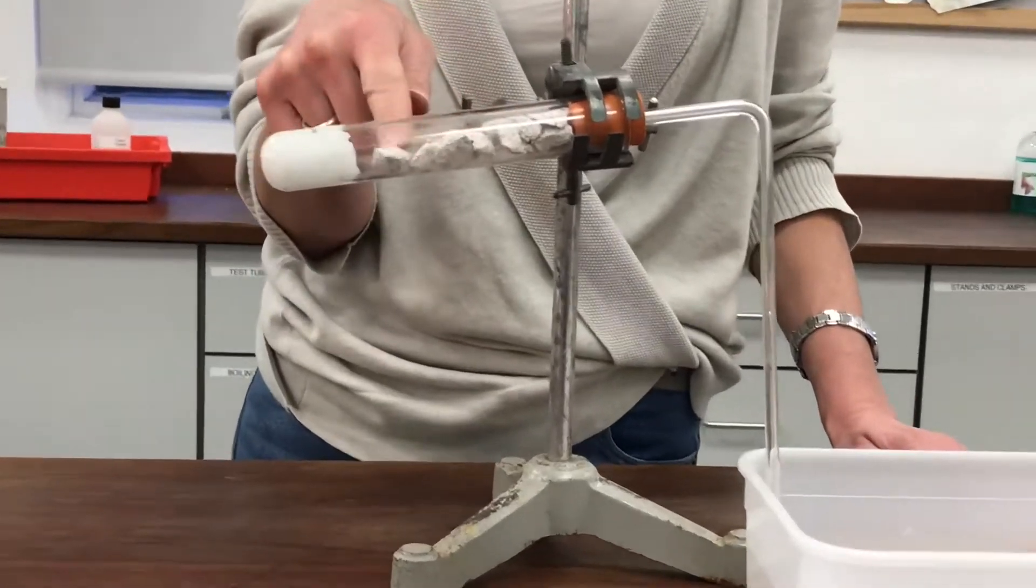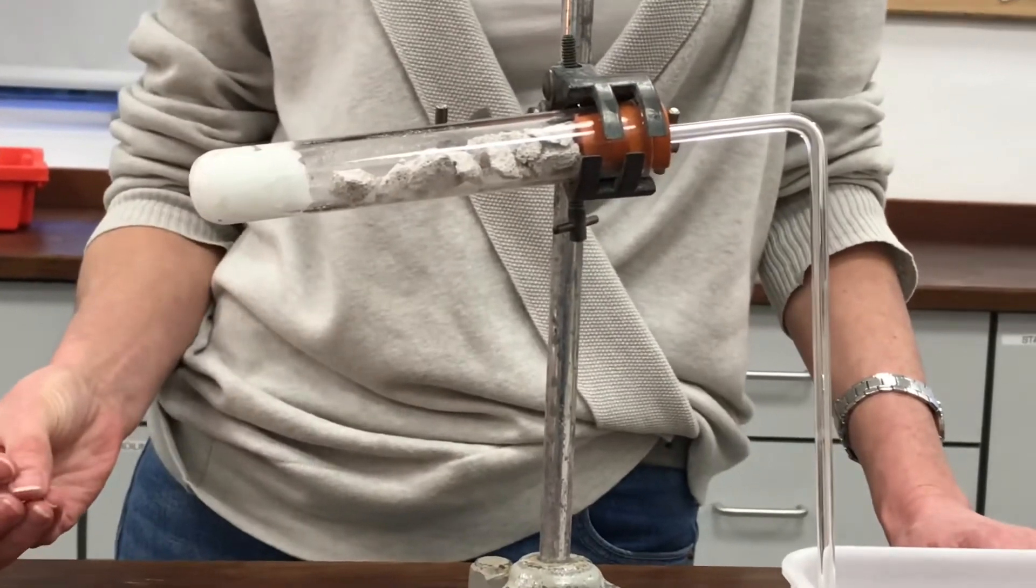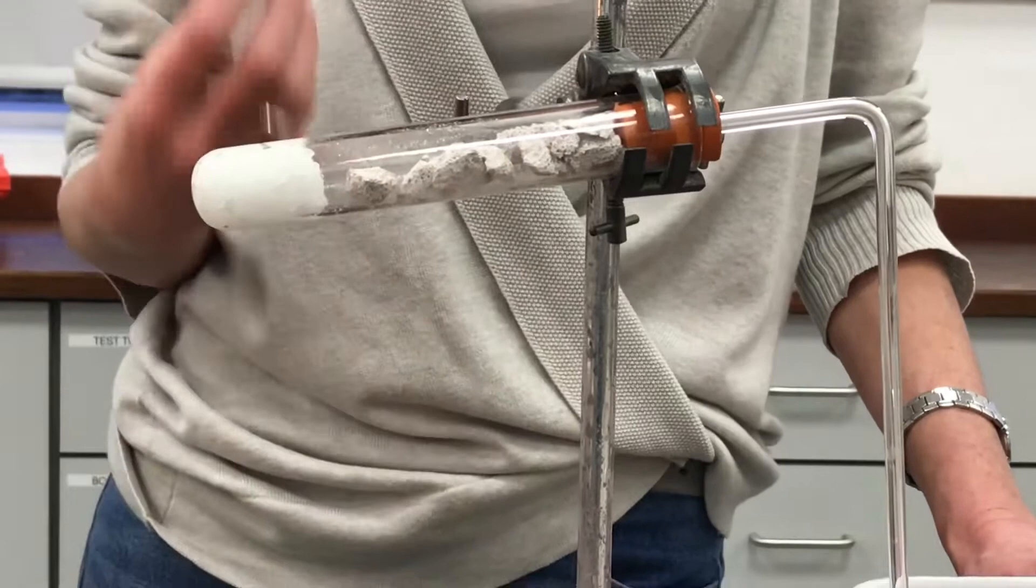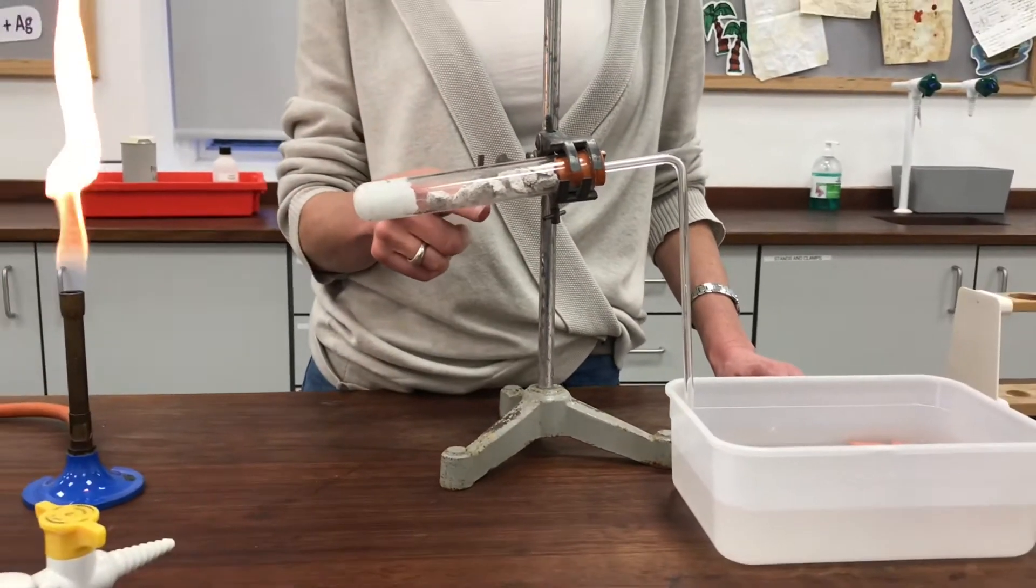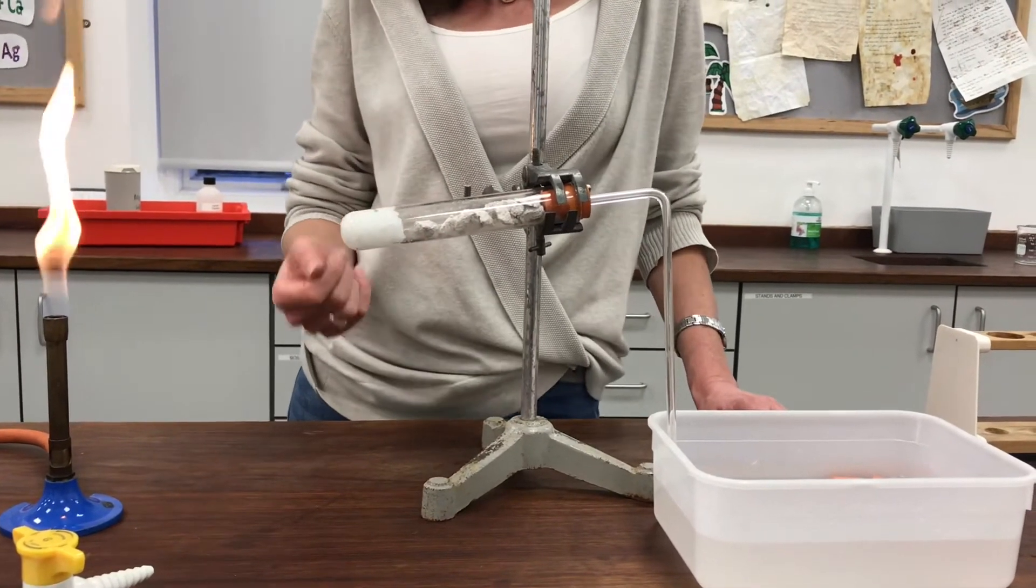The substance that I've got in there right now is pumice. I could also have used terracotta like you make plant pots out of or ceramic that's a broken up ceramic. Or if you want a proper chemical name to put in there I could use aluminium oxide which is also known as alumina or silicon dioxide which is also known as silica.